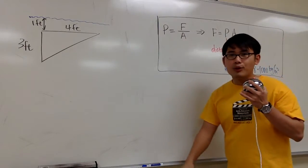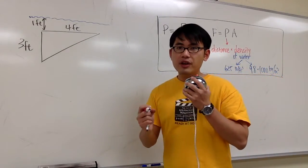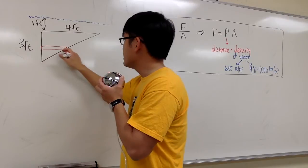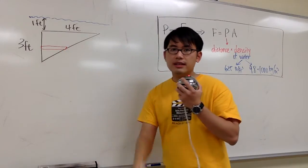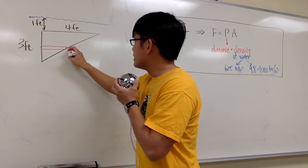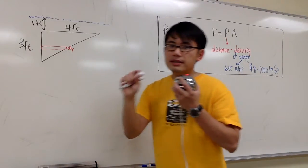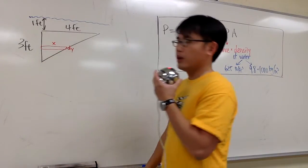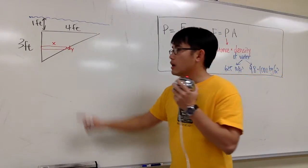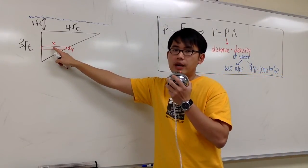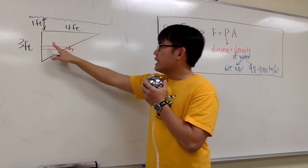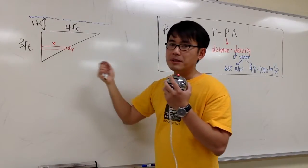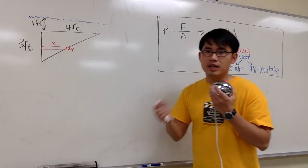The area is the part that depends on our labeling. To figure out the area, what we do is consider a slice — a rectangular slice like that. I would like to label this as dy, because this is a small amount of change in the y value. I'll label this right here as x, the horizontal distance. My first goal is to figure out a formula for the area of this rectangle.